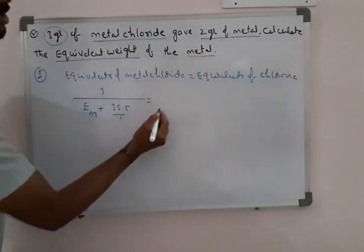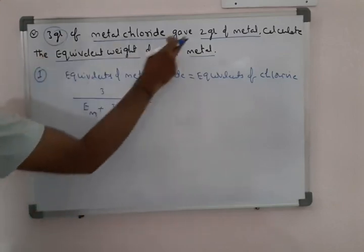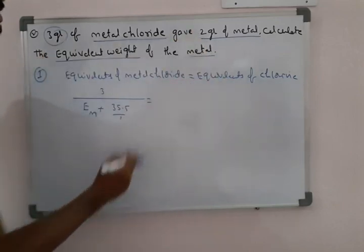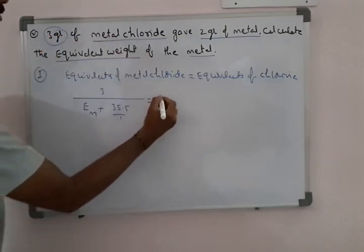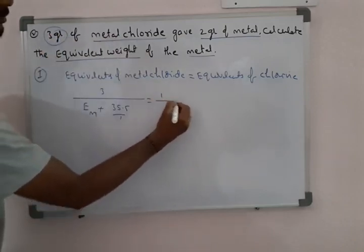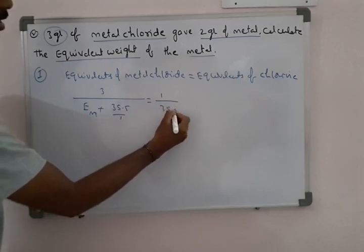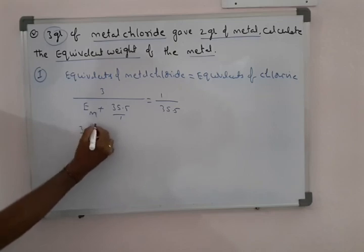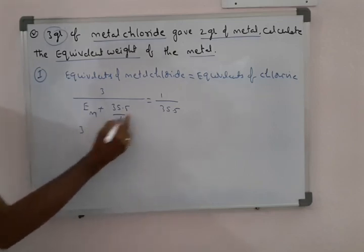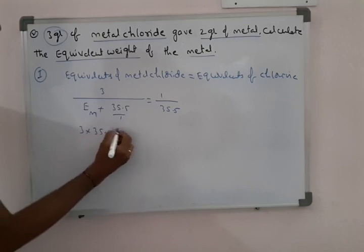2 grams of metal and 3 grams of metal chloride are given. So the weight of chlorine is 3 minus 2 equals 1 gram. So we have 2 grams of metal and 1 gram of chlorine, which gives a ratio of 2 by 1, or equivalently by 0.5.